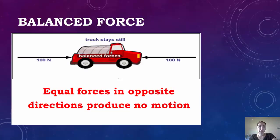So first we're going to look at balanced forces. When you have 100 newtons on this side and 100 newtons on this side, you're going to have a balanced force. So equal forces in opposite directions produce no motion. You can see here that the truck is standing still, and that's because it has balanced forces acting upon it.